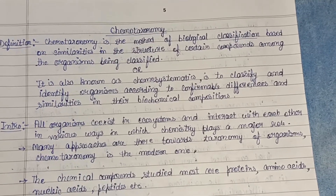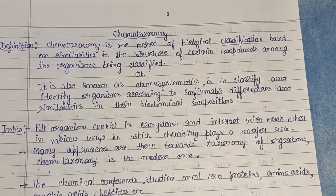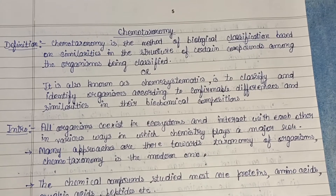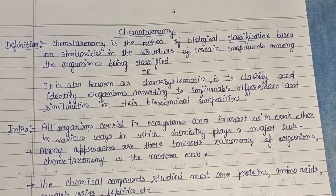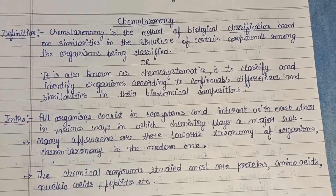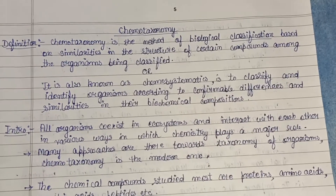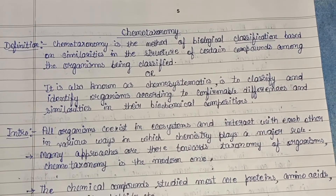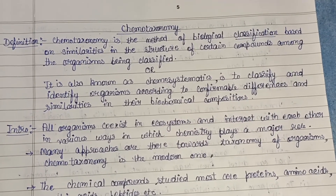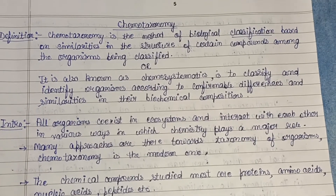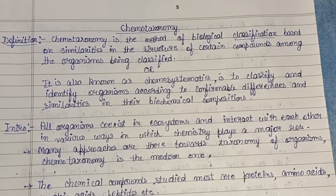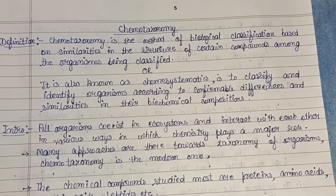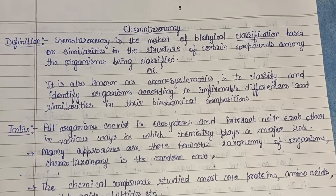Hello everyone, welcome back to my channel. Earlier we discussed behavioral taxonomy; today we are going to discuss chemotaxonomy. Chemotaxonomy is the method of biological classification based on similarities in the structure of certain biochemical compounds among the organisms being classified. It is also known as chemosystematics. The aim is to classify and identify organisms according to confirmable differences and similarities in their biochemical composition.